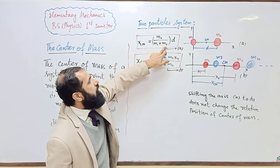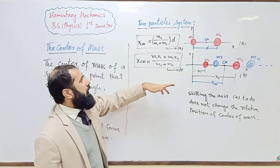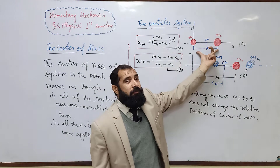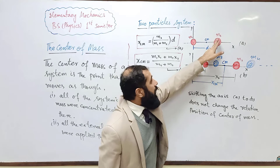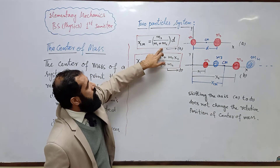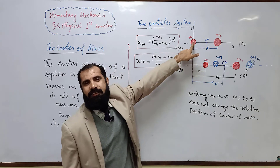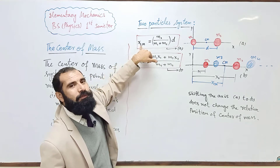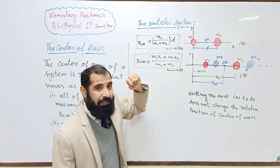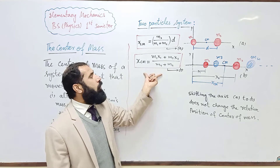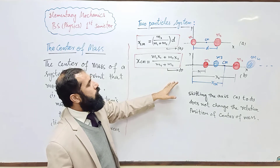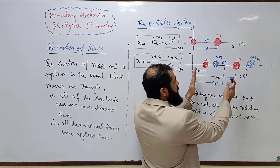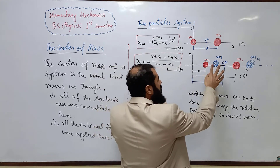The position of the center of mass is m2 divided by (m1 + m2) times d. If m1 is zero, then d is the position of center of mass — the center of mass shifts to that point. If m2 is zero, then the center of mass is at the origin. This simple expression gives us the position of the center of mass along the horizontal axis.